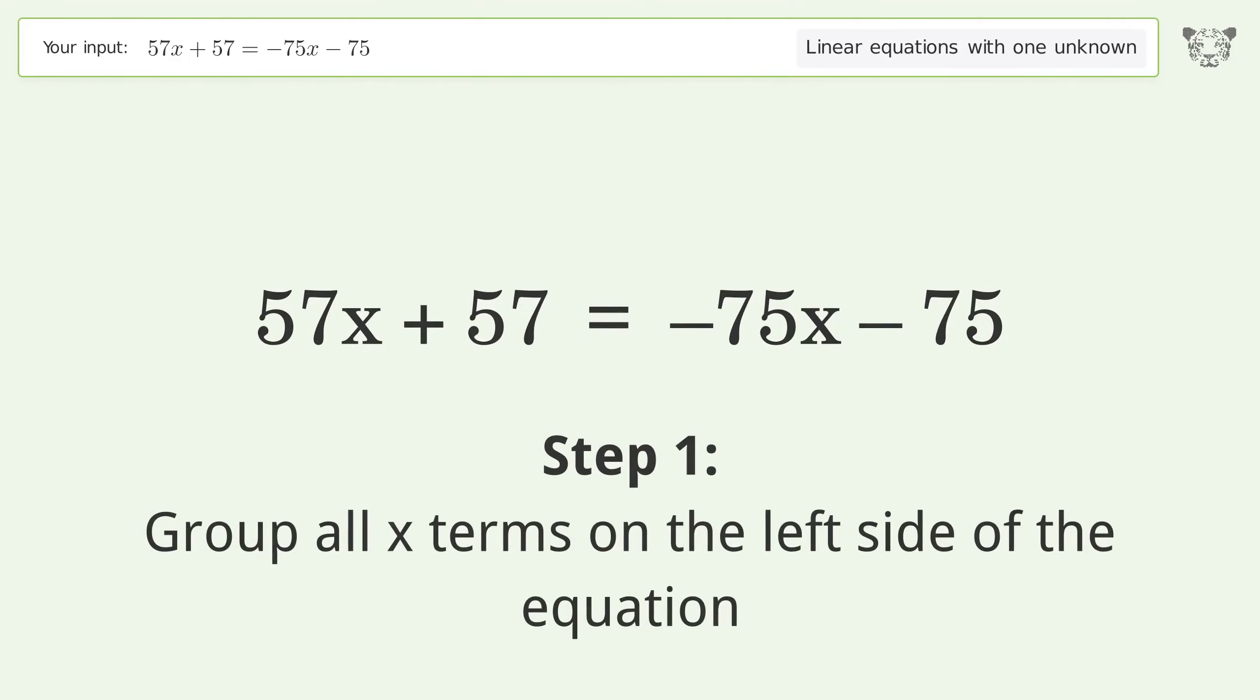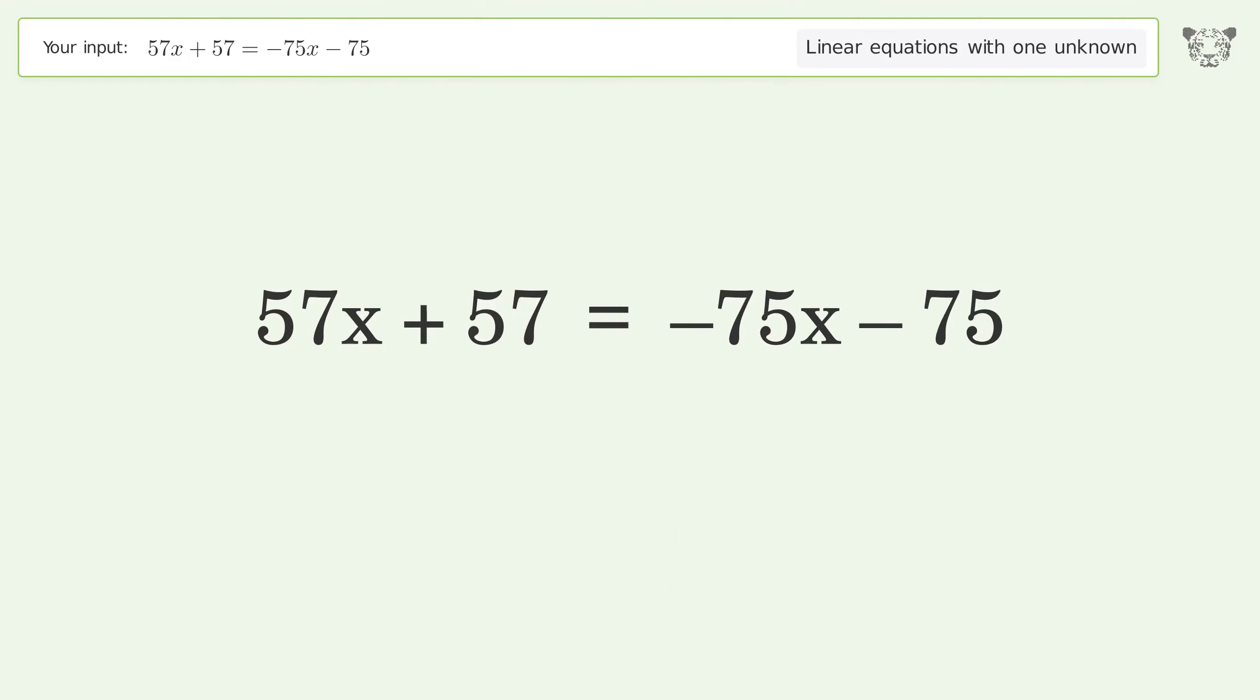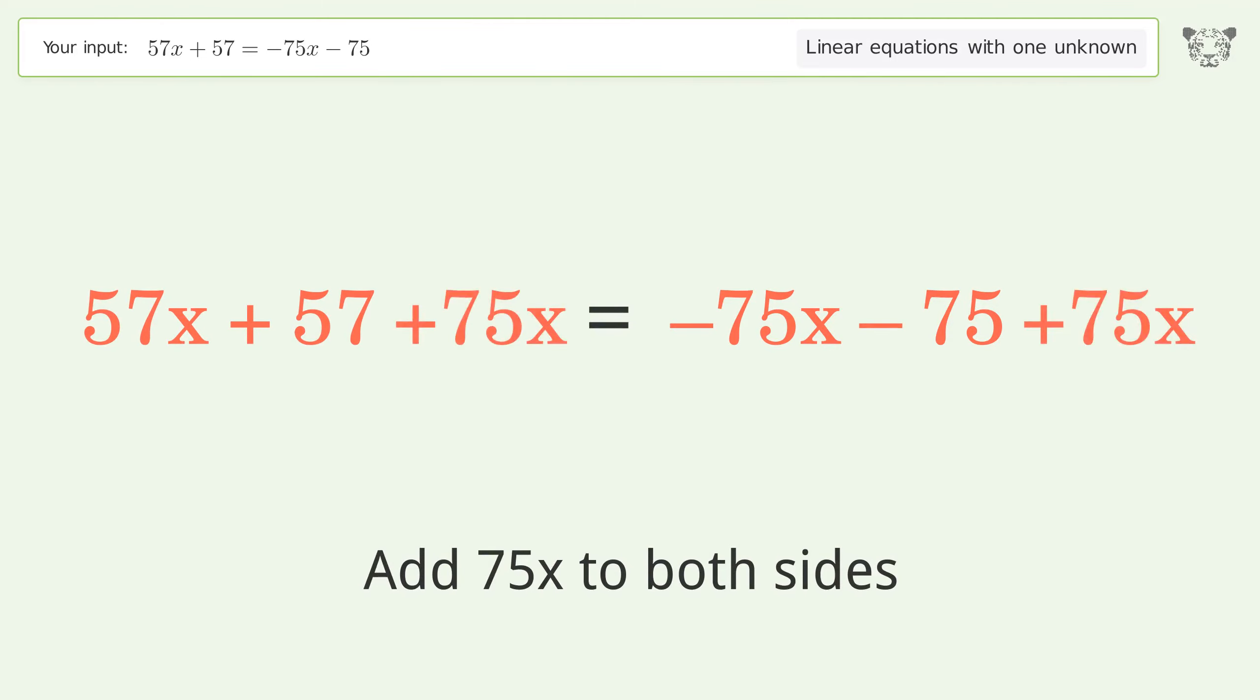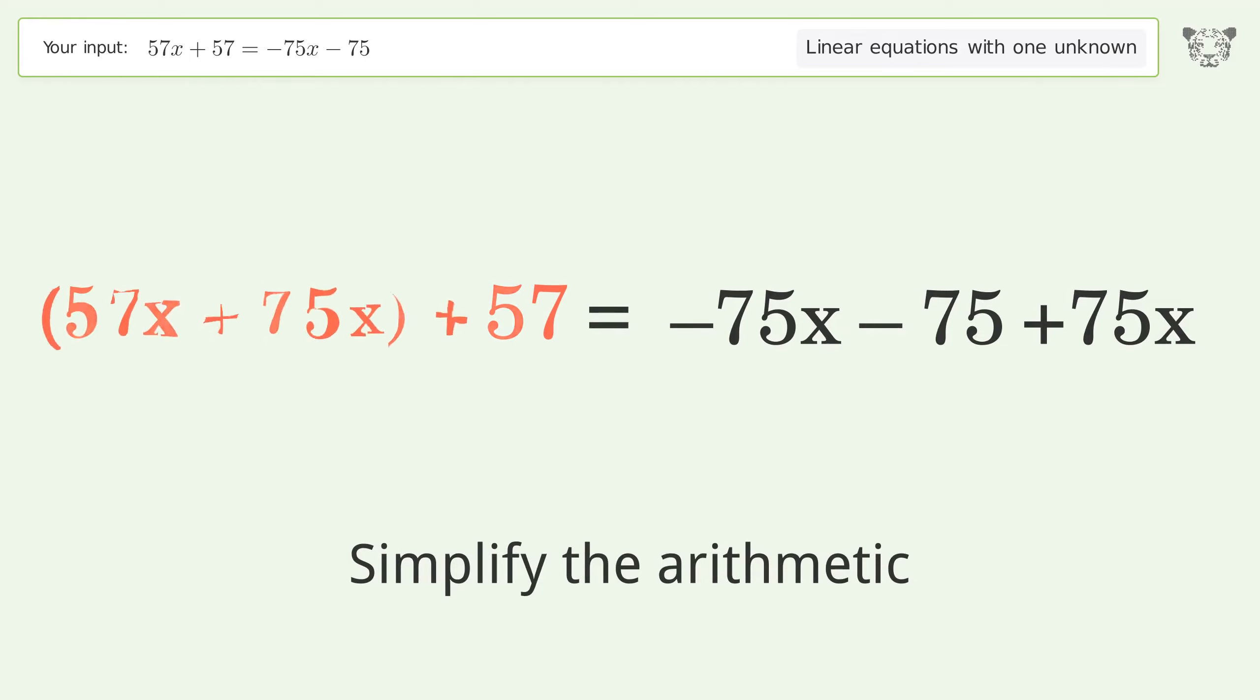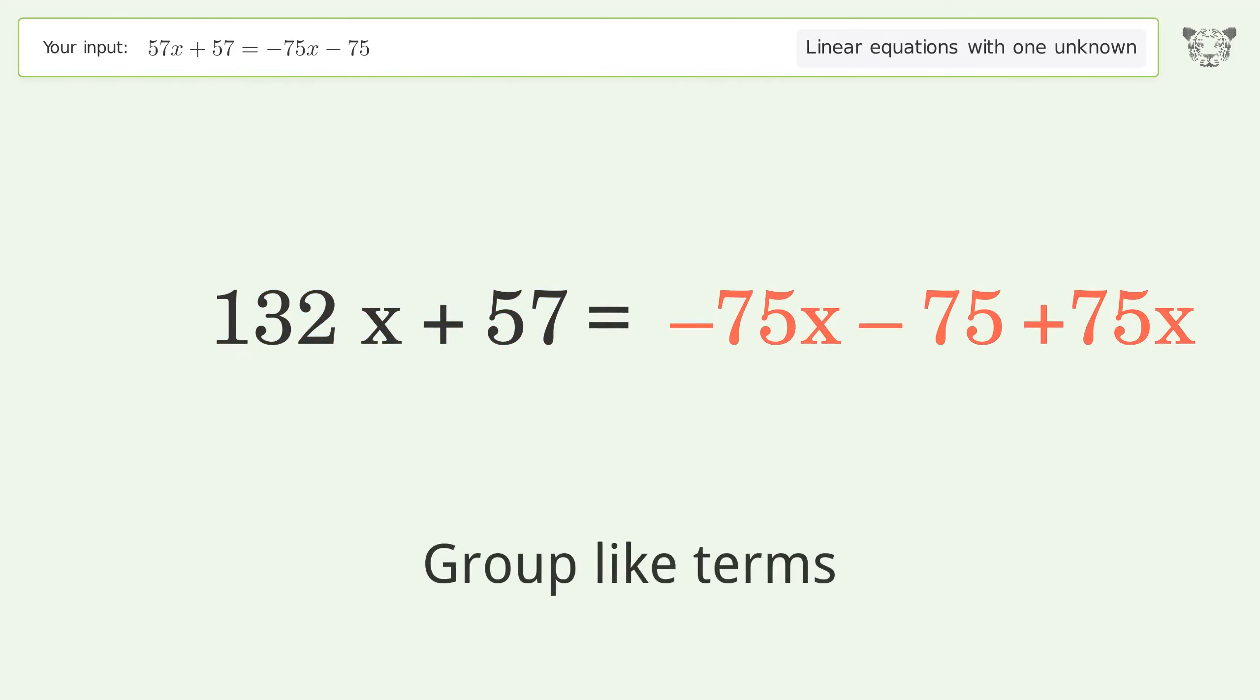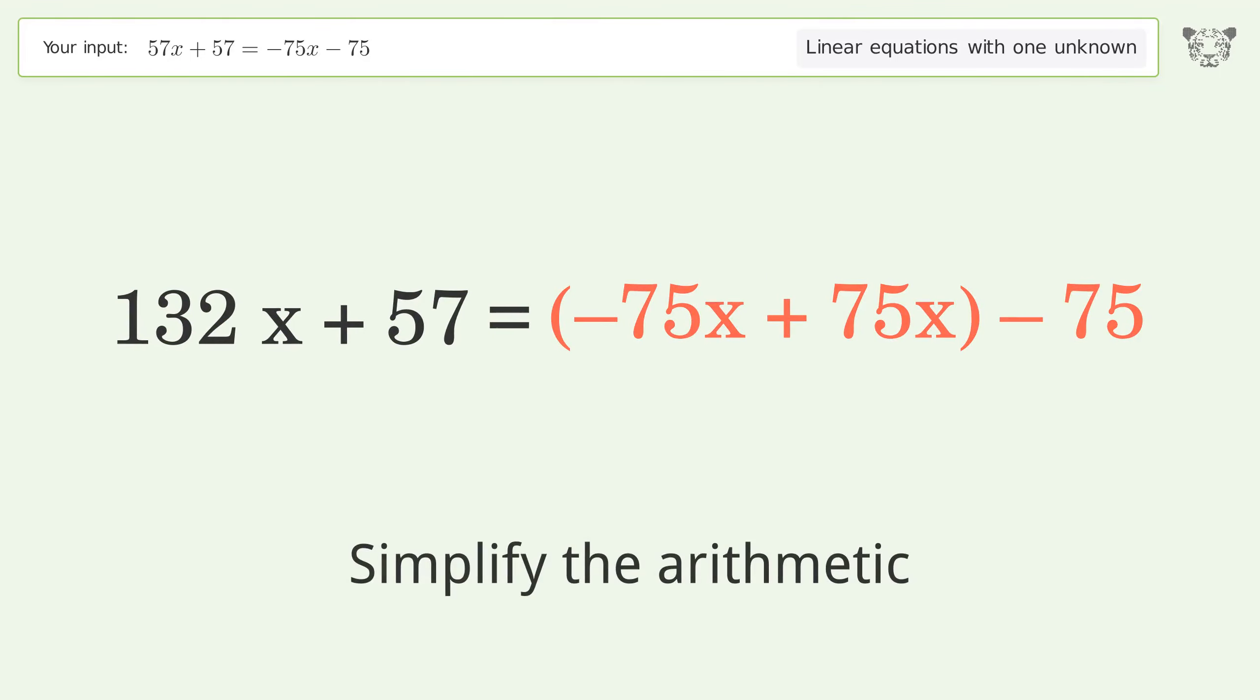Group all x terms on the left side of the equation. Add 75x to both sides. Group like terms and simplify the arithmetic.